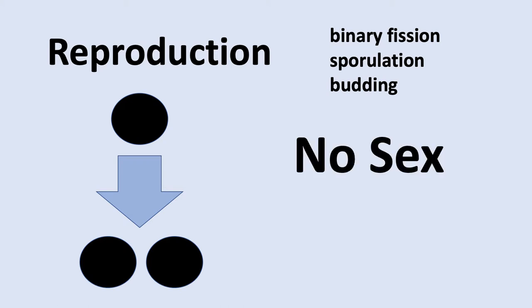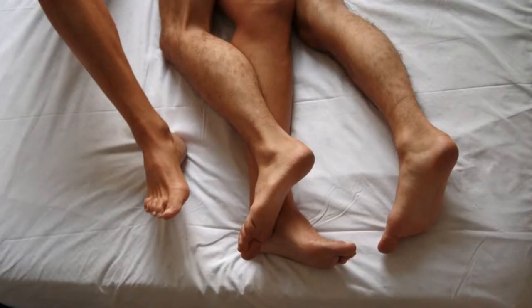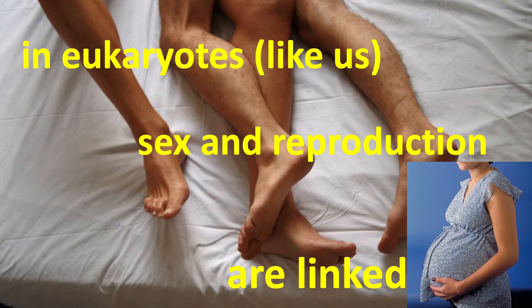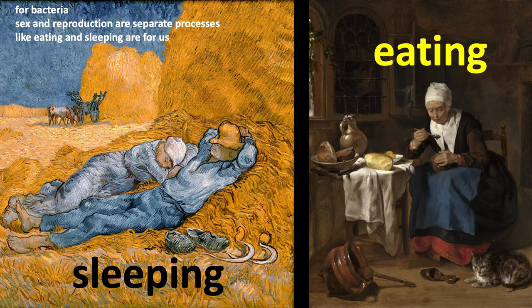Notice that none of what we've talked about involves sex — no genes were exchanged. The thing just got bigger, DNA was replicated, but there was no exchange of DNA. We're eukaryotes, so it's strange for us because sex and reproduction are closely linked — it's even hard for us to imagine them as separate. But for bacteria, sex and reproduction are separate processes, like eating and sleeping are for us. Bacteria have sex in one way, and reproduction is something completely different — they don't even associate the two.